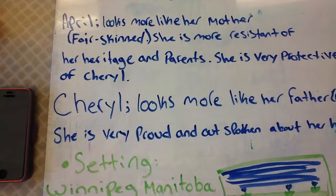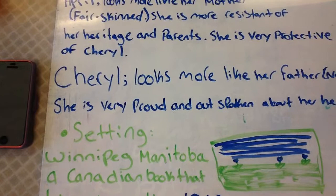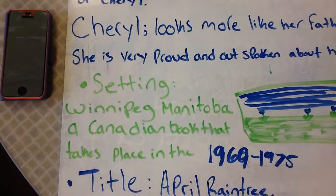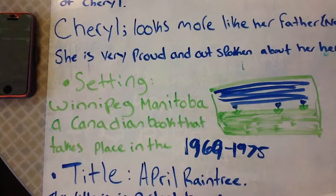Cheryl looks more like her father, so she looks more native. And she is very proud and outspoken about her heritage. The setting takes place in Winnipeg, Manitoba. It's a Canadian book that takes place from 1969 to around 1975.